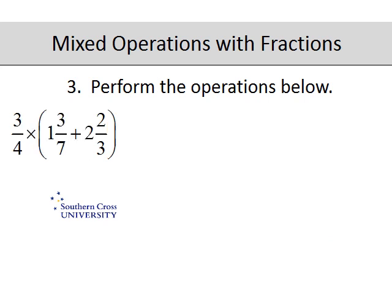And our third question. We've got some brackets here and brackets are the very first priority. So we need to do what's in the brackets first and then we need to do the multiplication. So this becomes three-quarters times. Now I'll retain the brackets while we do this. One and three-sevenths is ten over seven plus two three six seven eight over three.